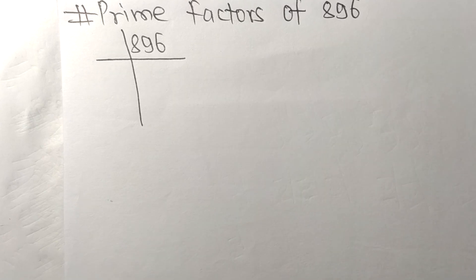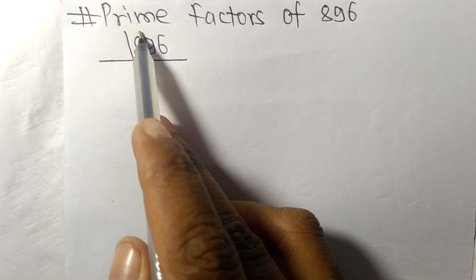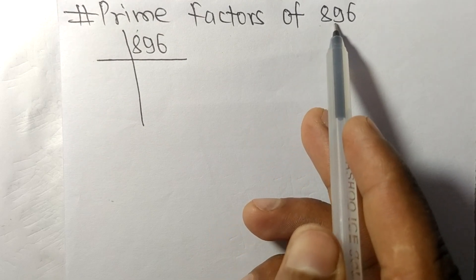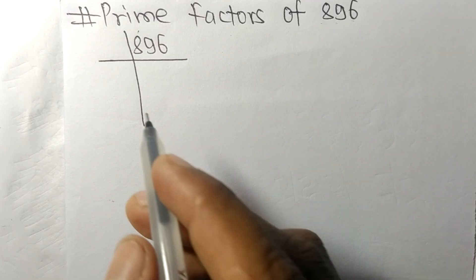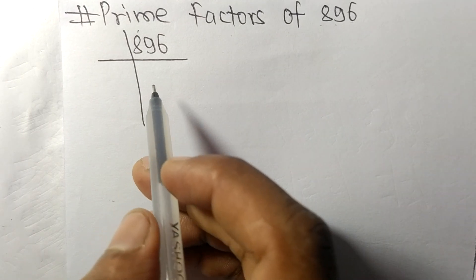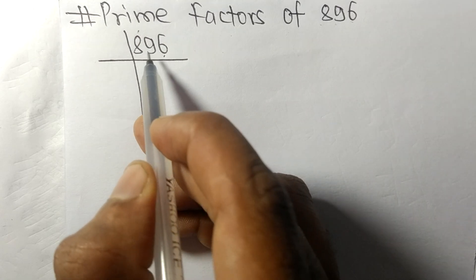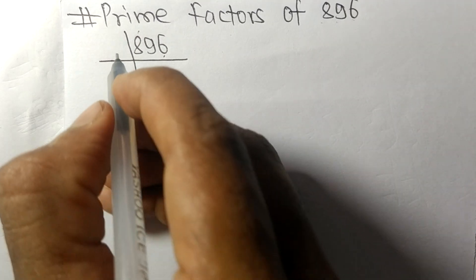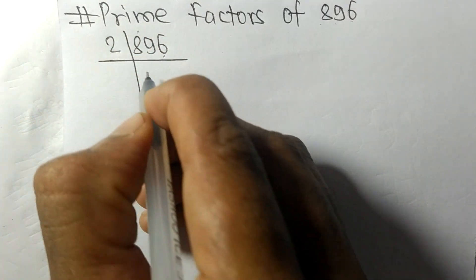Today in this video we shall learn to find the prime factors of 896. Since it ends in an even number 6, this whole number is divisible by 2.